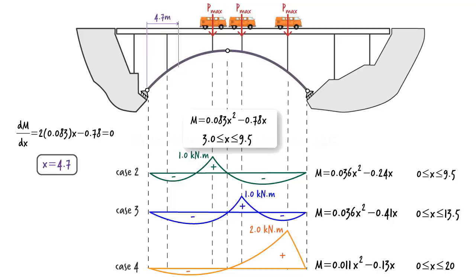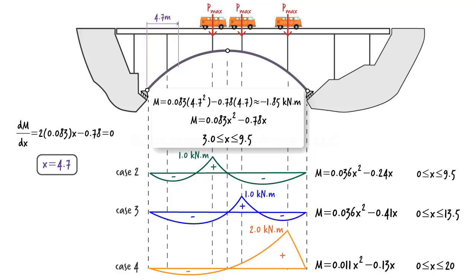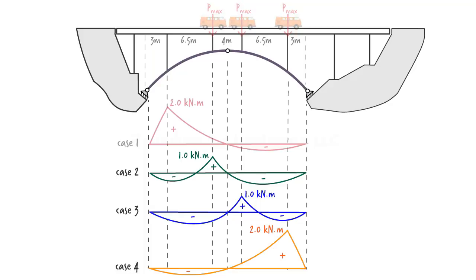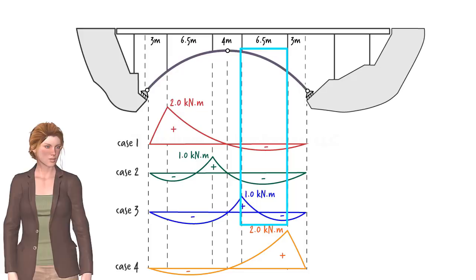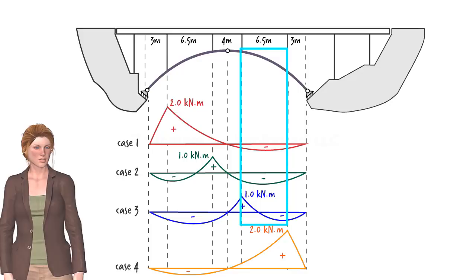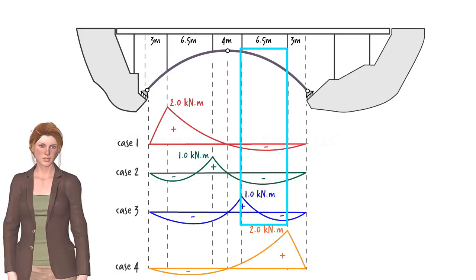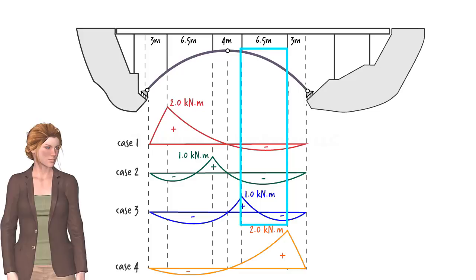To determine the magnitude of the moment at this location, we substitute 4.7 into the equation. Hence, the maximum negative moment in the arch is 1.85 kNm if P max is assumed to be 1 kN. Due to the symmetrical nature of the bridge, the same maximum negative moment could also occur at the other end of the arch, somewhere between 13.5 and 20 meters from point A. That is, when the unit load for case 4 is absent and the other loading cases are combined, negative moment reaches its maximum value in this interval.